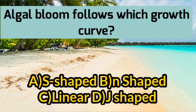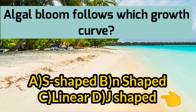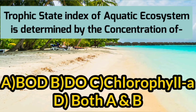The next question asks which growth curve algal bloom follows. The correct option is D — algal bloom follows a J-shaped curve.